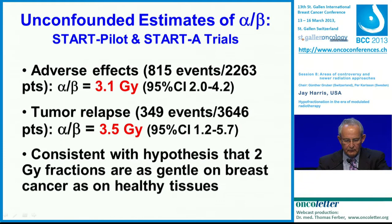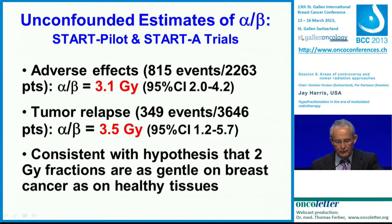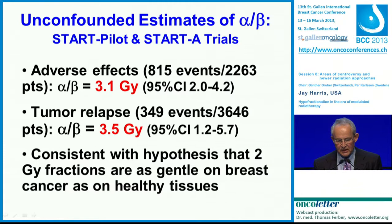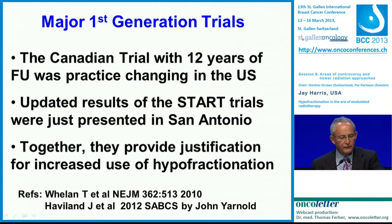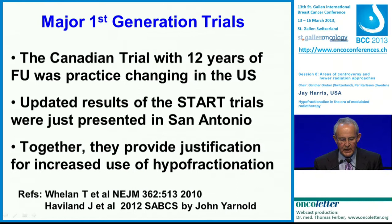Based upon the START-A trial and the pilot trial, the alpha-beta ratio for normal tissues was 3.1 and for tumor it was 3.5. This is consistent with the hypothesis that giving 2 gray per day is as gentle on breast cancer as it is on normal tissue. The Canadian trial with 12 years of follow-up was practice-changing in the United States. And the updated results of the START trials just presented in San Antonio, together, provide justification for increased use of hypo-fractionation.